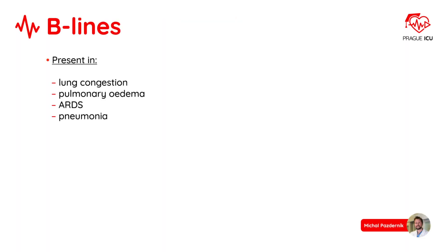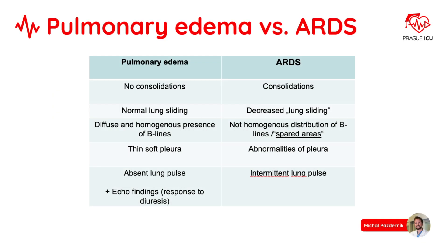B-lines are present in lung congestion, pulmonary edema, ARDS, or pneumonia. In critically ill patients it is very important to differentiate B-lines related to pulmonary edema from those related to inflammatory lung disease.